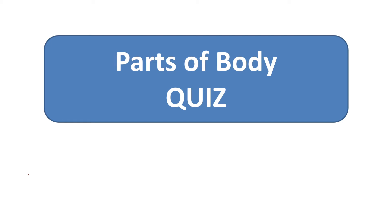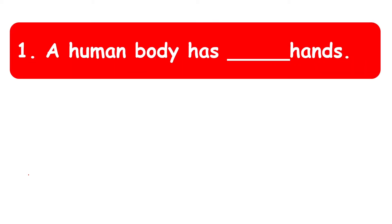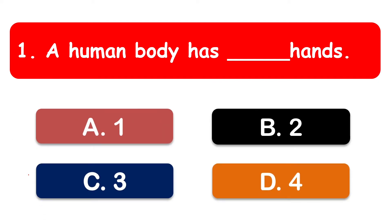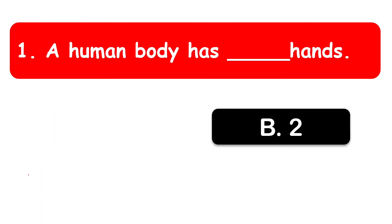The first question: a human body has how many hands? The options are one, two, three, and four. The correct option is two — we have two hands.